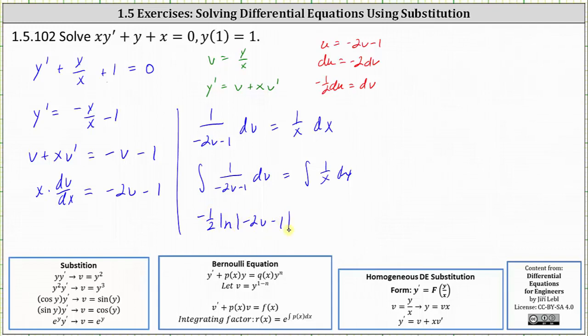The indefinite integral on the left is equal to negative one half, natural log absolute value of the quantity negative two v minus one. On the right, we have the indefinite integral of one divided by x dx, which is equal to natural log absolute value of x plus a constant, which we'll call c sub one.